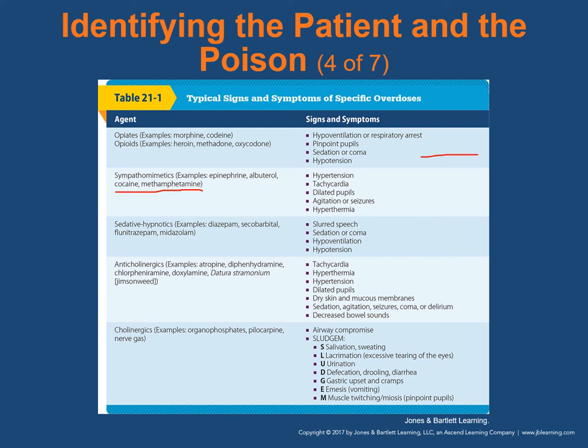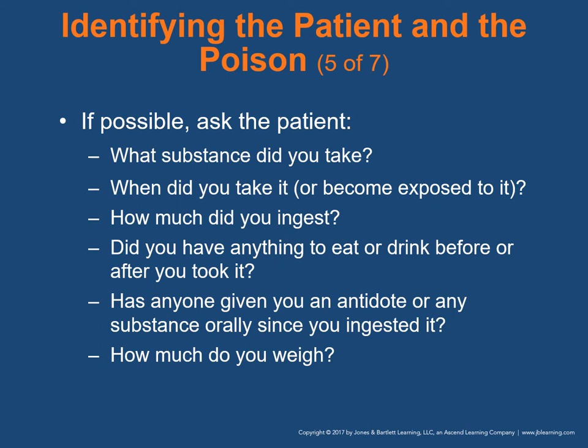If possible, ask the patient: what substance did you take? When did you take it or become exposed to it? Try to get a good idea of how much they ingested or inhaled. Did they have anything to eat or drink before or after exposure? Has anyone given them an antidote or any substance orally since ingestion? And find out how much they weigh — that's important when you talk to poison control or the emergency department.